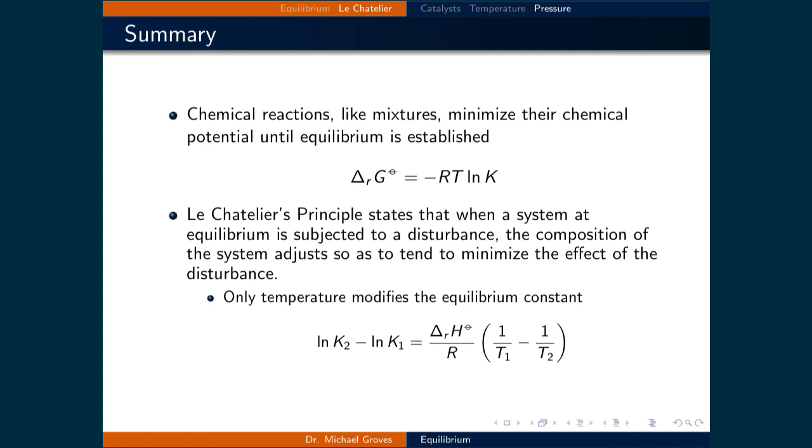And it modifies it according to ln K2 - ln K1 = ΔH°/R × (1/T1 - 1/T2).